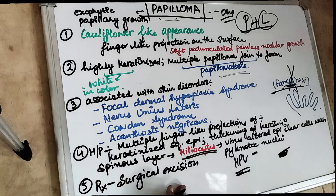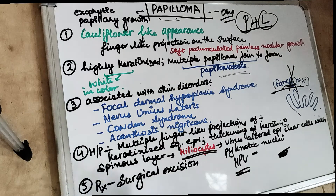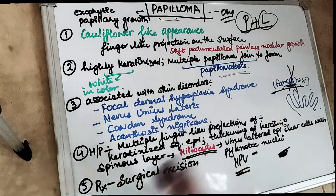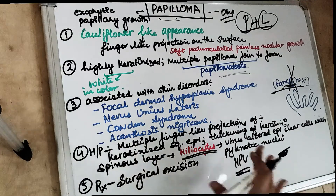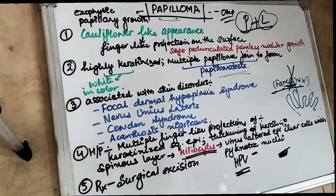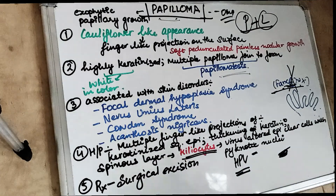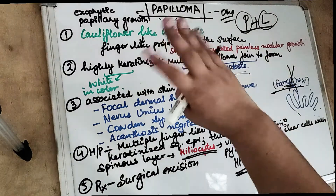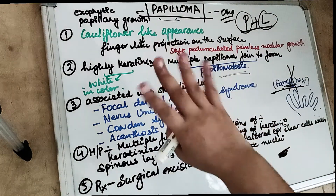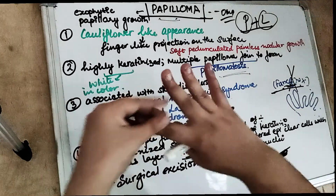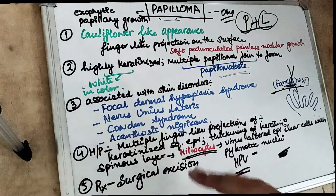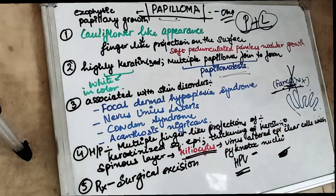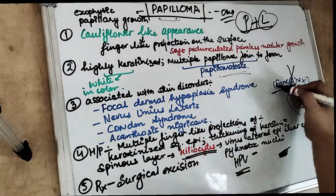The treatment for papilloma is surgical excision, and the recurrence rate is very low — it is rare. So after excision, it will generally not occur again. Always remember: cauliflower-like appearance, papillary finger-like projections, white color due to keratin, and FANC for the associated disorders.